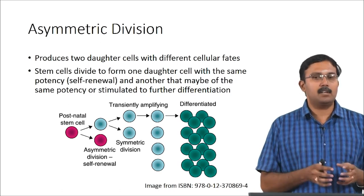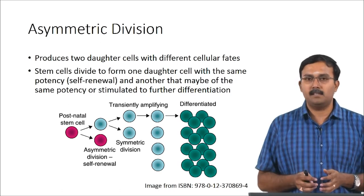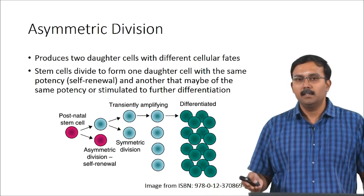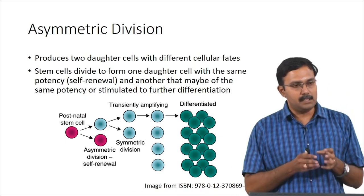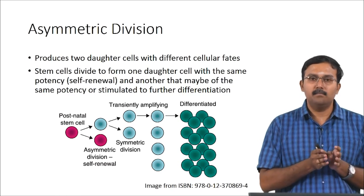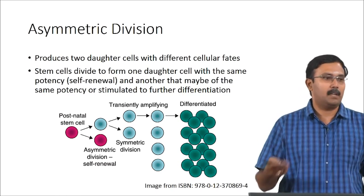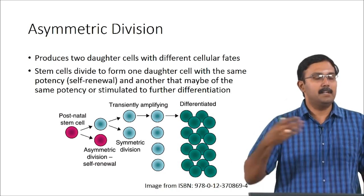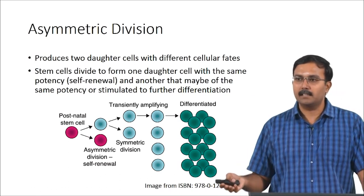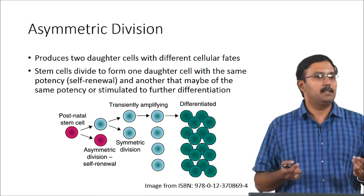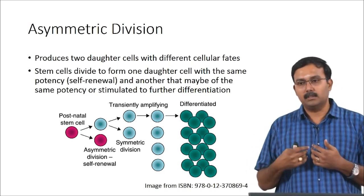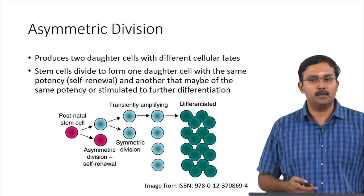One daughter cell has the same potency — it is a stem cell — and the other can either be a stem cell or be stimulated for further differentiation. Usually this daughter cell with a different fate can multiply before it gets differentiated, because multiplication after complete differentiation is much slower. That is why progenitor cells are important — they divide at a faster rate but are already committed to the lineage, so they will get differentiated to the final type of cells.